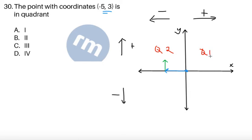Now recall that these are the four quadrants, so quadrant 1 is the top right corner, and then we're going to have this counterclockwise rotation for the other quadrants. So negative 5, 3 is somewhere in quadrant 2. So we're going to have choice B.